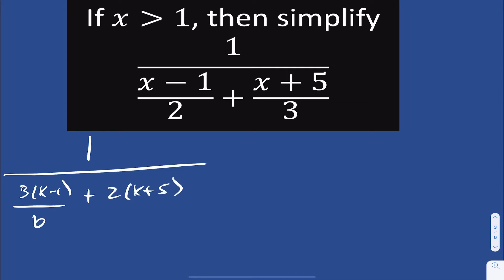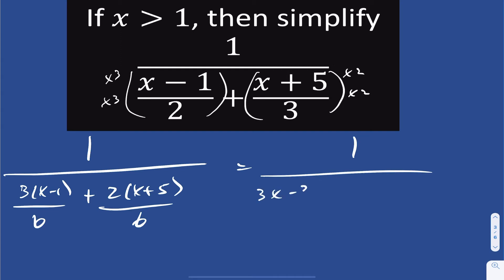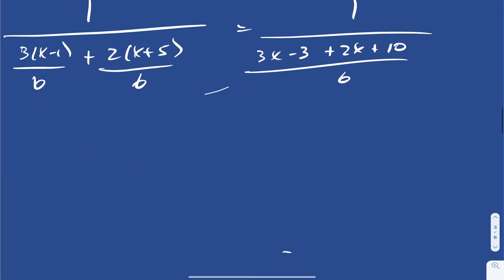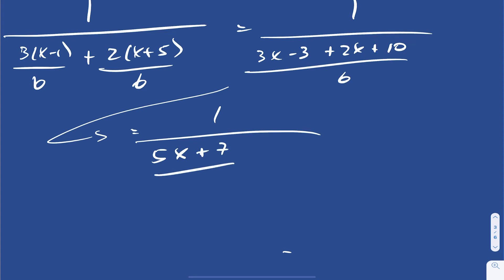Multiply the top by 2 and the bottom by 2, you also get 6. So I multiplied the first expression by 3 over 3 and the second by 2 over 2. Now we have a common denominator. Distributing the 3 into the first binomial and the 2 into the second binomial, we get 1 over 3x minus 3 plus 2x plus 10, all over 6. Simplifying: 3x and 2x is 5x, and negative 3 plus 10 is positive 7, giving us 5x plus 7 over 6.